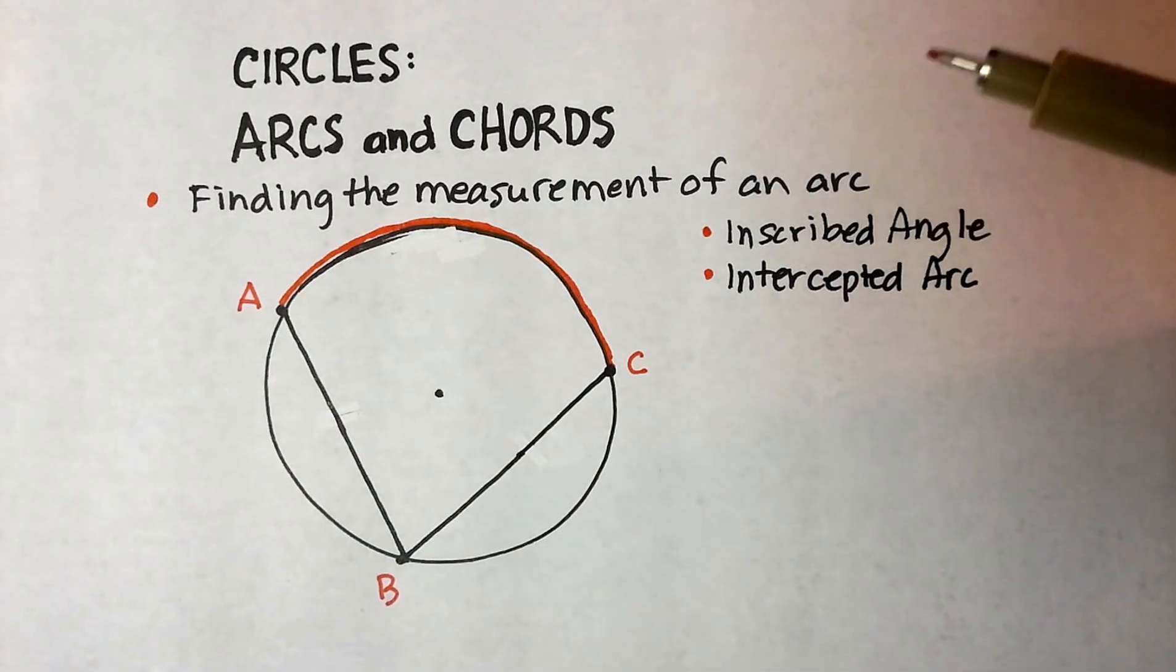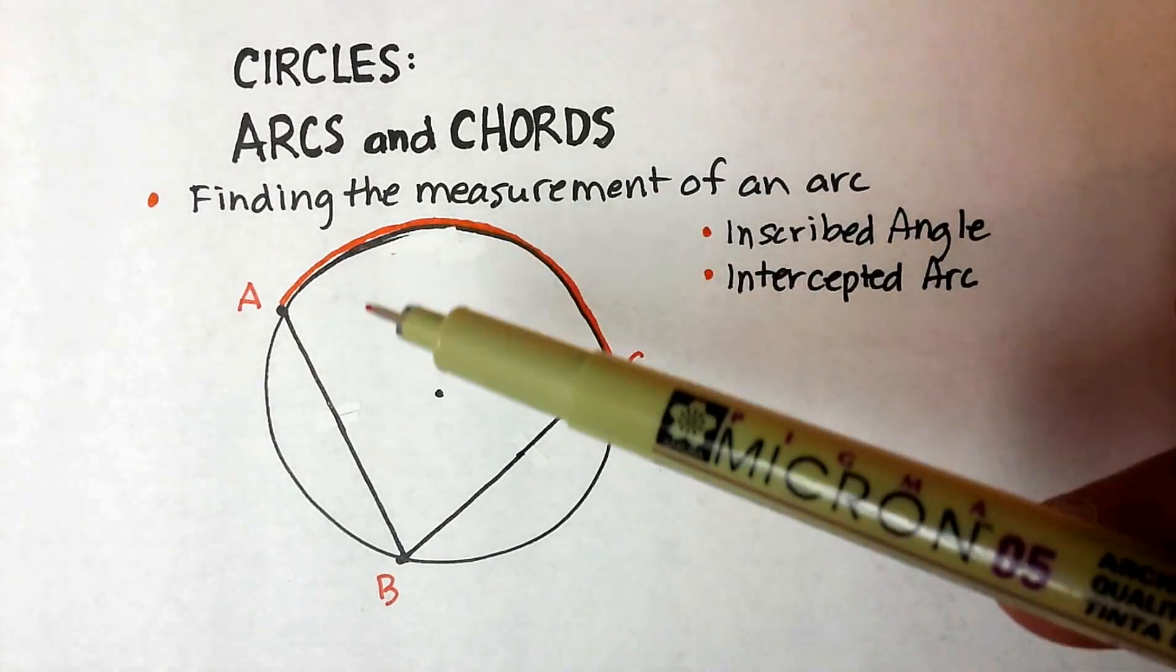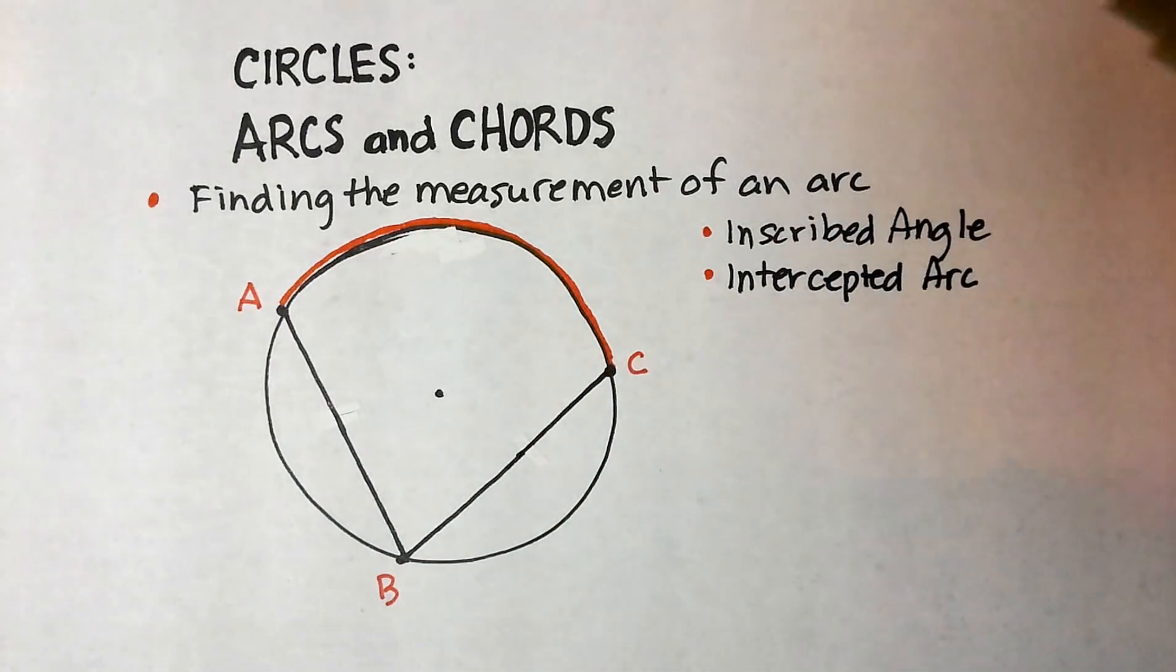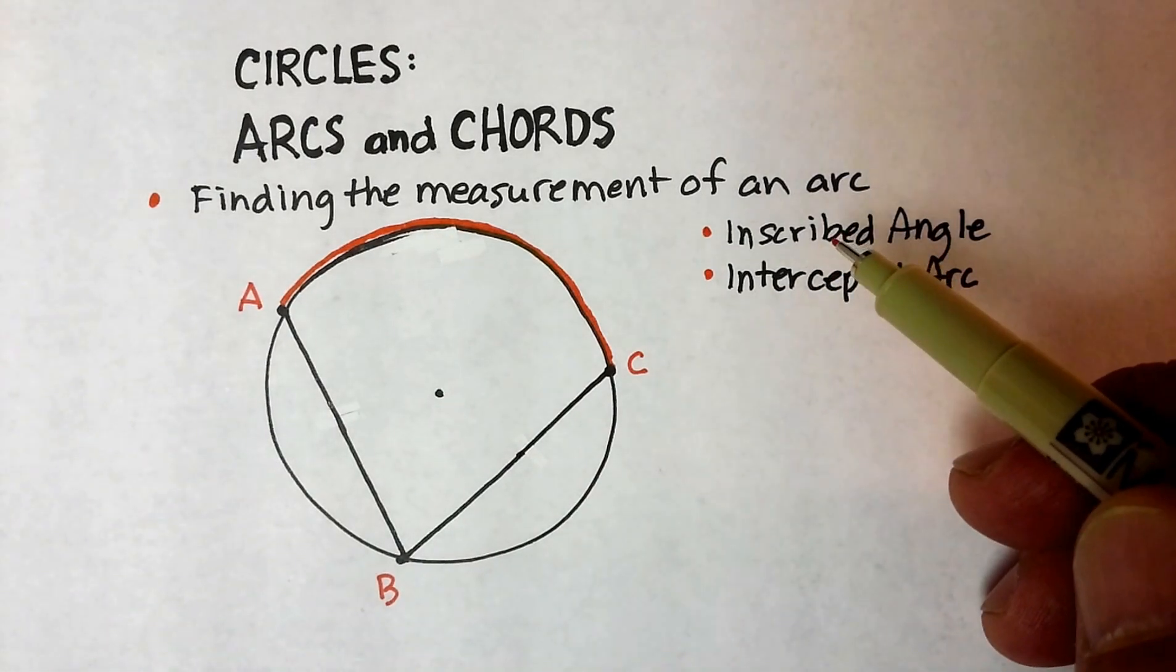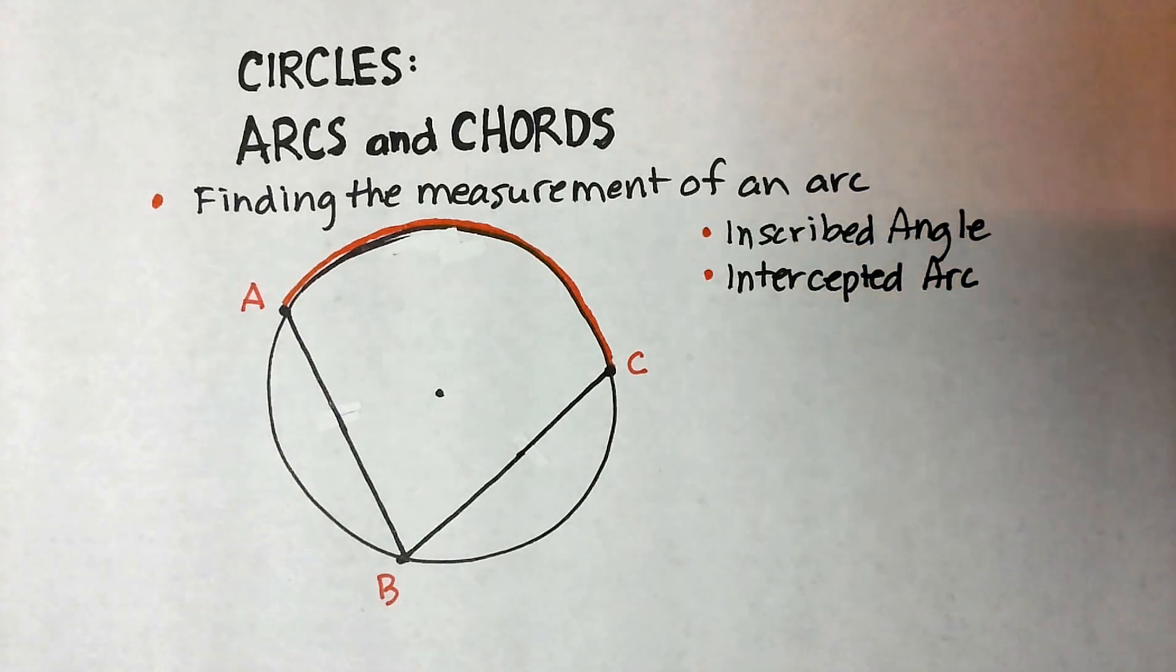Okay, in this video we're going to talk about three things. How to find the measurement of an arc given two chords. We're going to describe what is called an inscribed angle, and we're going to describe what's called an intercepted arc.